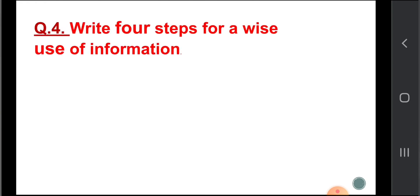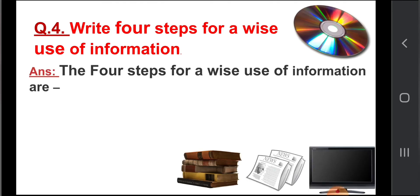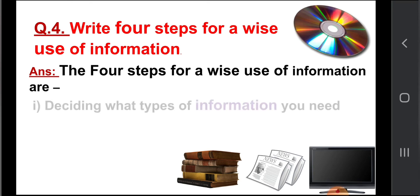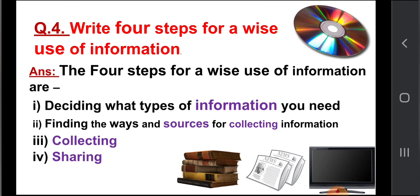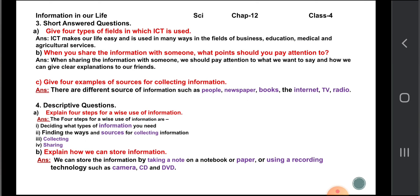Write four steps for wise use of information. The four steps are: deciding what type of information you need; finding the ways and sources for collecting information; collecting the information; and sharing the information. Give four fields in which ICT is used. ICT makes our life easy and is used in the fields of business, education, medical, and agricultural services. When sharing information, you should pay attention to what you want to say and how to give a clear explanation to your friends.